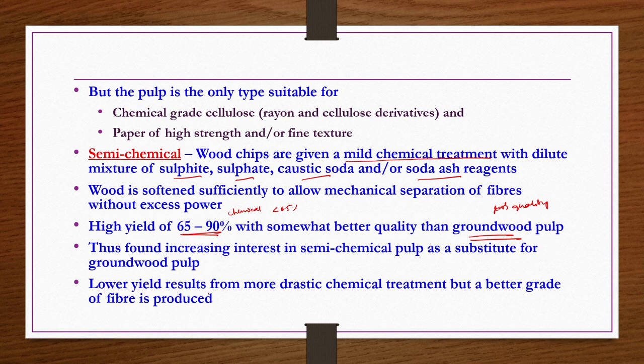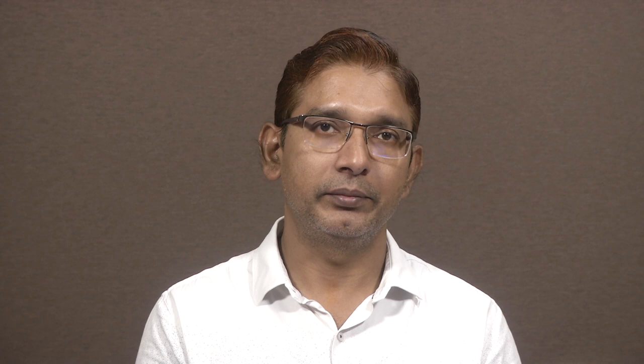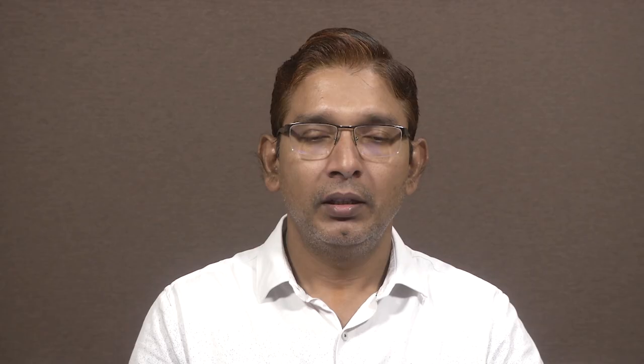Lower yield results from more drastic chemical treatment, but a better grade of fiber is produced. If you do drastic chemical treatment it becomes like the chemical method, where yield is lower though quality is better. Now we compare two chemical pulping processes for cellulose fiber production: the sulfate and sulfite methods. The trade name for sulfate pulp is kraft. The sulfite pulp has different trade names like sulfite, magnified, neutral sulfite, etc.